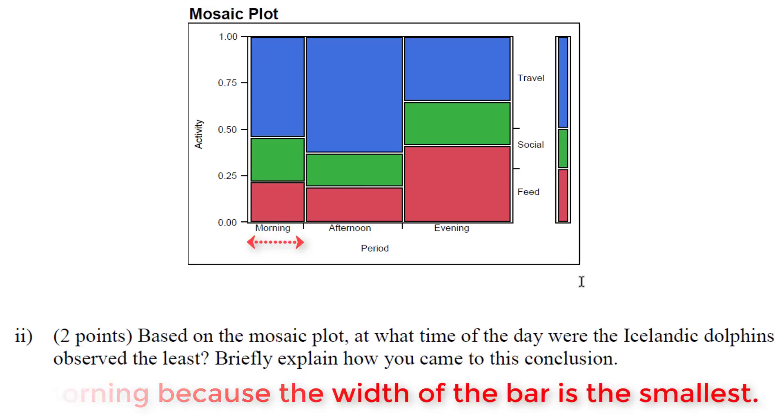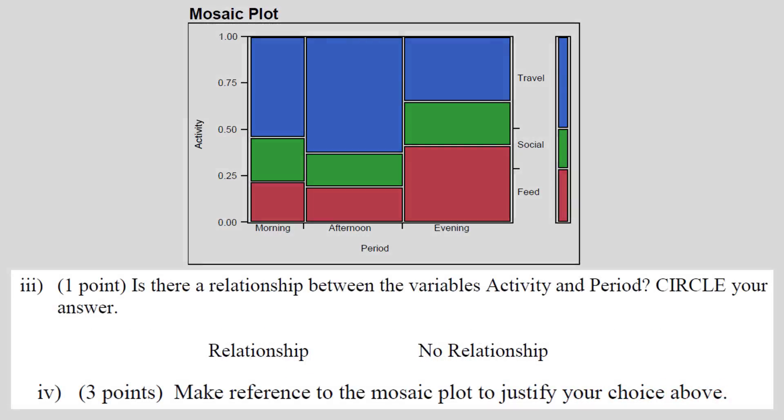Finally, we want to know if there is actually a relationship between activity and period, and then we need to justify our reasoning for this. So let's go up and look at the mosaic plot and come up with some reasoning. Now if there is a relationship, what we will see is a difference between the levels.